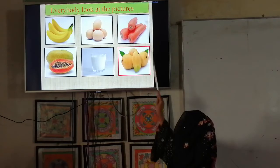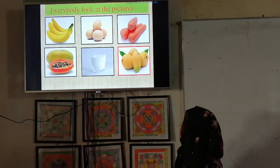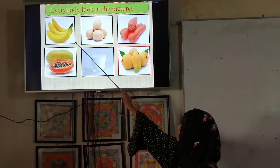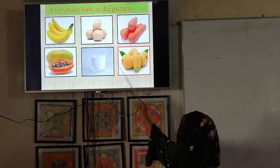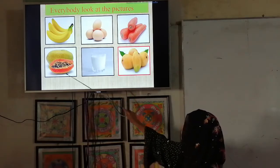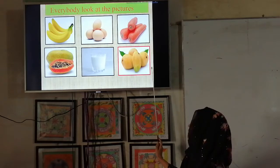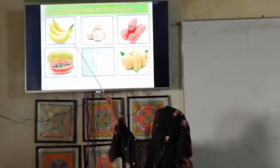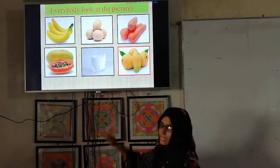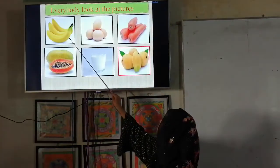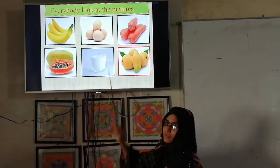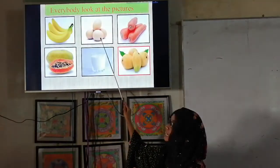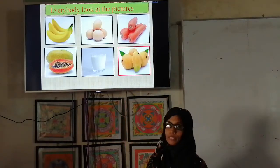Everybody, look at the pictures. Here we can see banana, beans, egg, carrot, papaya, milk, and mango. All of these are very important for our body. Fruits like these give us vitamins and minerals. From eggs we get protein and all kinds of vitamins. Egg and milk are called ideal foods because they contain all kinds of nutrients.